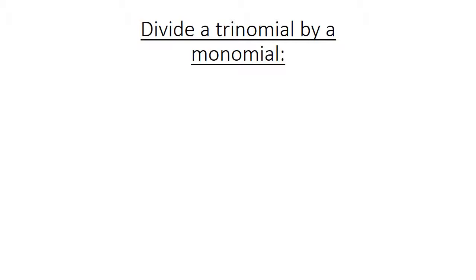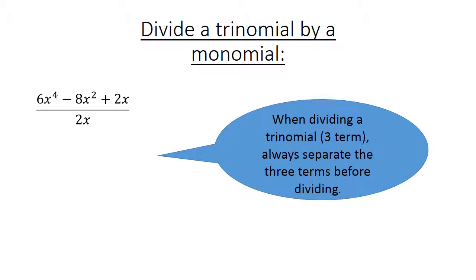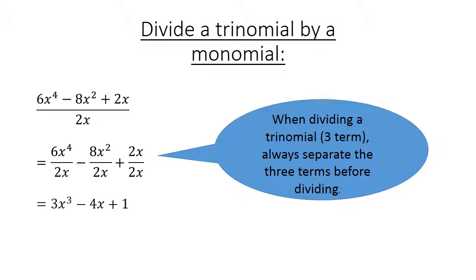Divide a trinomial by a monomial. 6x to the power of 4 minus 8x to the power of 2 plus 2x, divided by 2x. When dividing a trinomial we always separate the three terms before dividing. This gives 3x to the power of 3 minus 4x plus 1. We cannot simplify — the terms are not like terms.